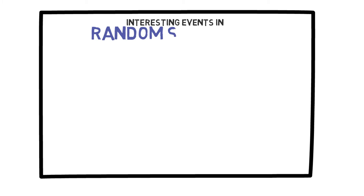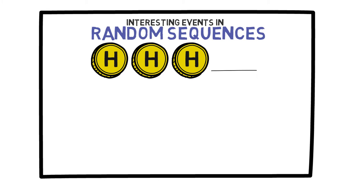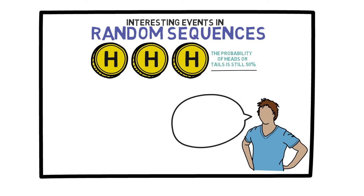But let's look again at our long sequence of heads and tails more closely and see if we can observe some interesting events. If I tell you that I toss a coin and observe three heads in a row, what do you think will be the probability of a fourth toss resulting in tails? Is tails more likely after three heads? Some people might think that since we have observed a lot of heads, we need to observe tails — but that's incorrect. The probability of heads or tails is still 50%. In probability theory, we say that these coin tosses are independent.